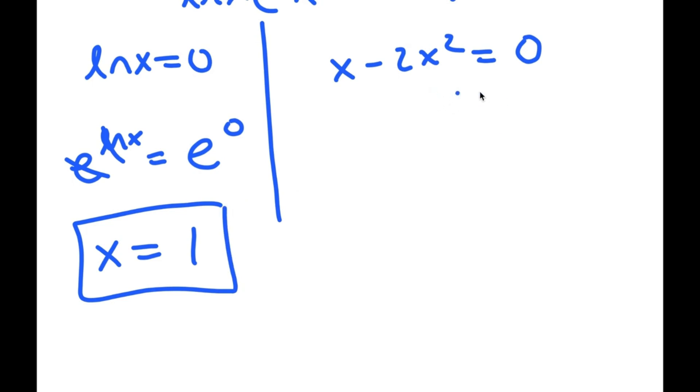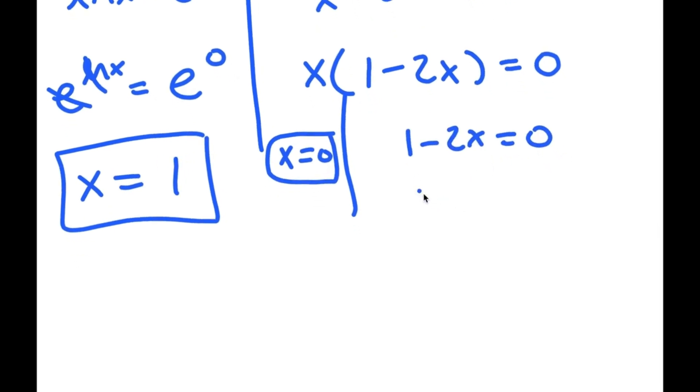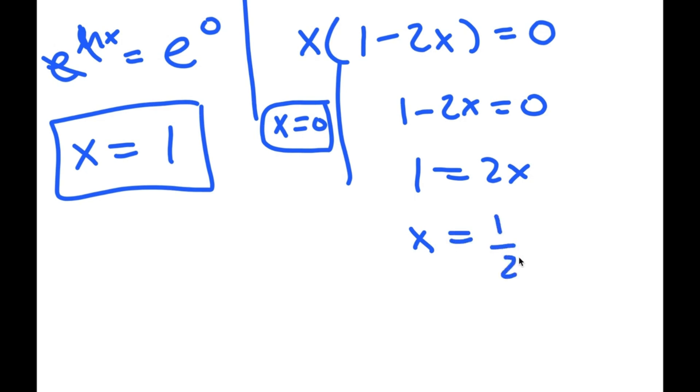For x minus 2x squared equals 0, I'm going to factor out x. So I get x times 1 minus 2x is equal to 0. So this means that x equals 0, and 1 minus 2x equals 0, meaning 1 is equal to 2x, and x is equal to 1 half. So these are my three solutions to this equation.